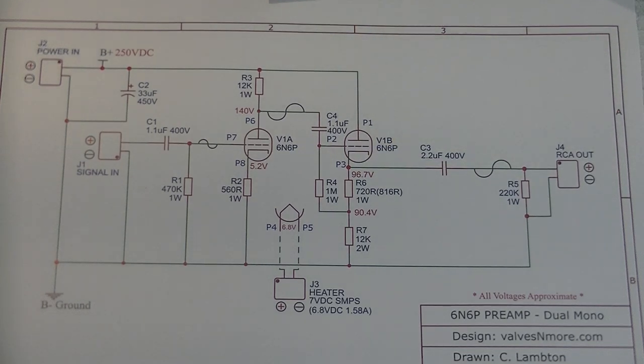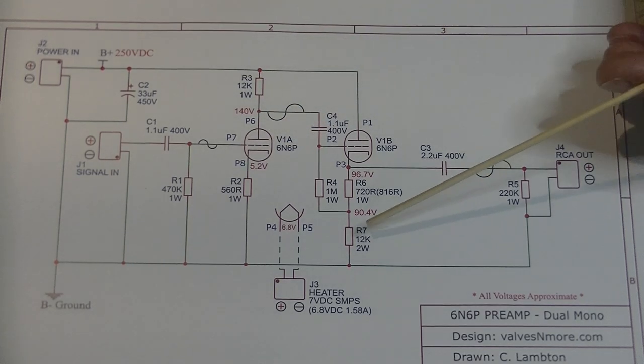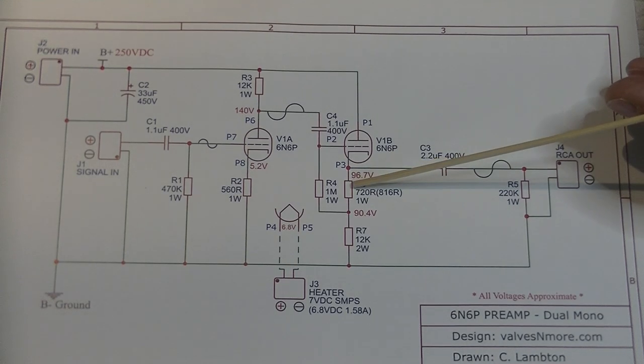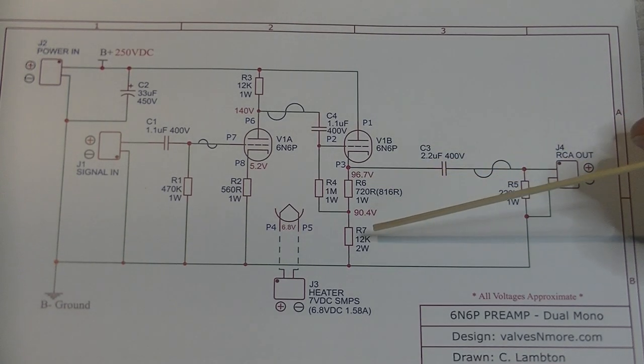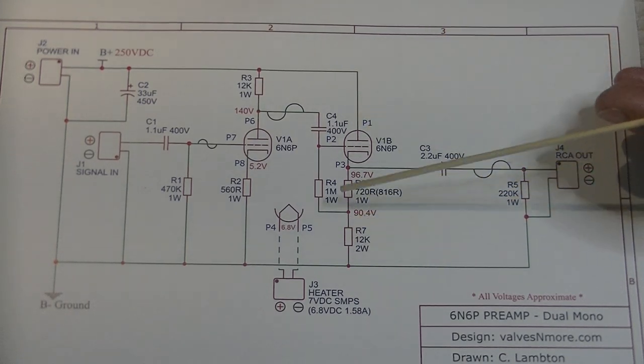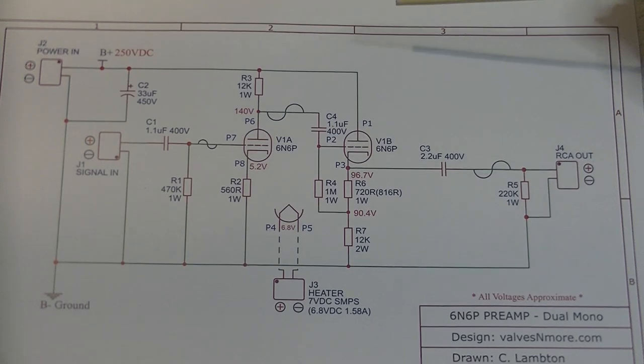Here we've got a really high value, 1 meg. That is a grid bleed resistor. This sets the bias of the cathode stage. Have a look here, this is the plate resistor for the gain stage. The 12K is down here. Between the cathode bias resistor and this inverted plate resistor, that sets the operating point of this tube.